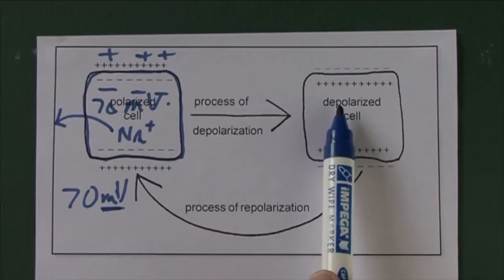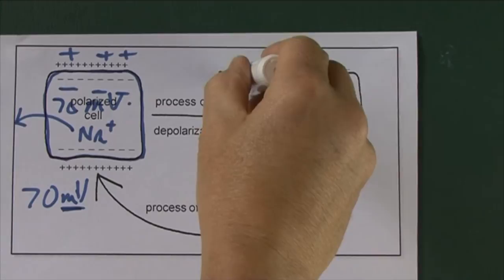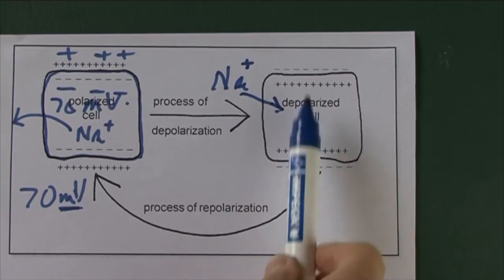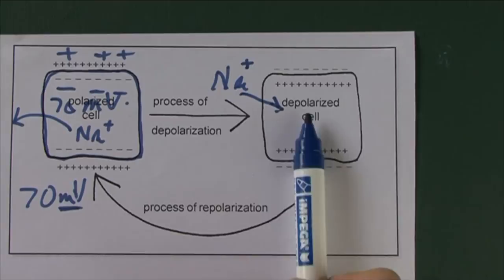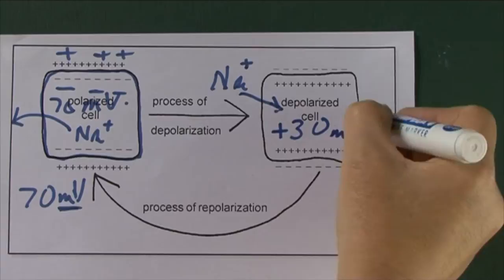When a nerve impulse is actually passing, there's going to be a redistribution of ions across the membrane. Sodium ions are going to come in, and with many positive ions entering it's going to become positive inside and negative outside. So it changes from being polarised via the process of depolarization to being a depolarised cell. At the peak of the depolarization it will probably be something like plus 30 millivolts inside.